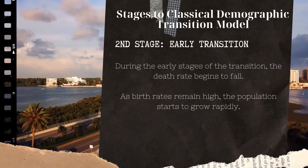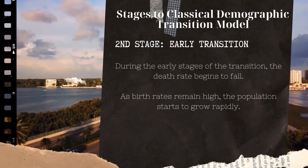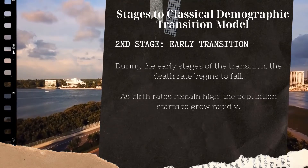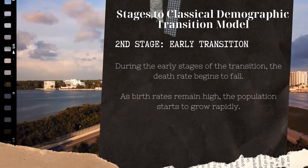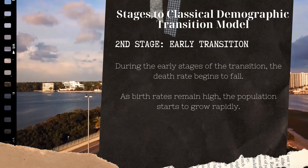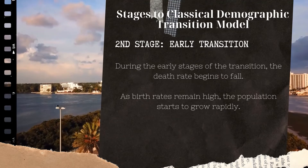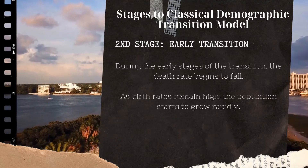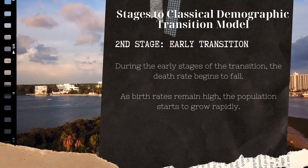The second stage of the classical demographic transition model is called the early transition. The economy goes into the phase of economic growth. Agricultural and industrial productivity increases and the means of transport progress. There is greater mobility of labor, education develops, incomes rise, people get more and better quality food products, medical and health facilities are advanced, and modern drugs are used. All these factors bring down the death rate, but the birth rate is almost stable.